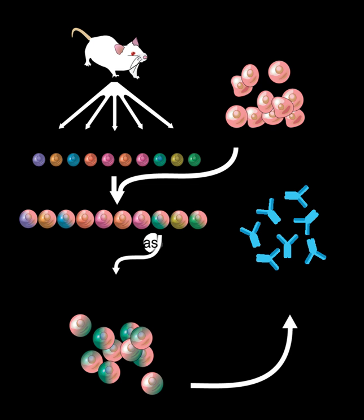In this way, only the B cell-myeloma hybrids survive, since the HGPRT gene coming from the B cells is functional. These cells produce antibodies and are immortal.